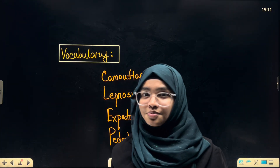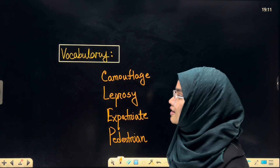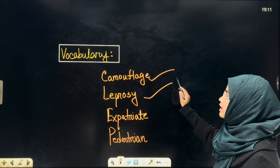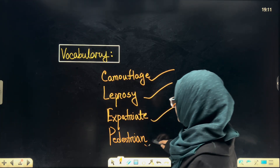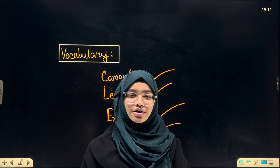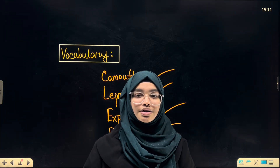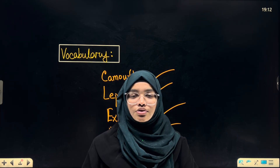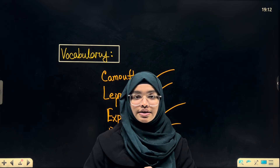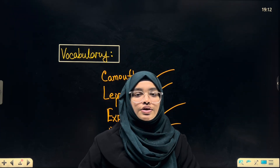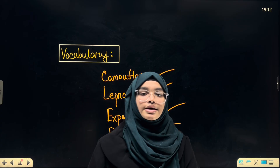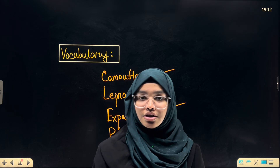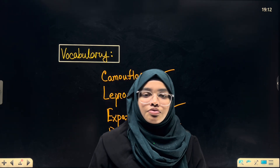There is proof that vocabulary comes up — for example: camouflage, leprosy, expatriate, Palestine — these are high-frequency words. Since this is an engineering university exam, it's going to be a bit tough, a bit rough, so be careful. Keep track of vocabulary; follow the suggestions given in class and do a lot of practice from the question bank.